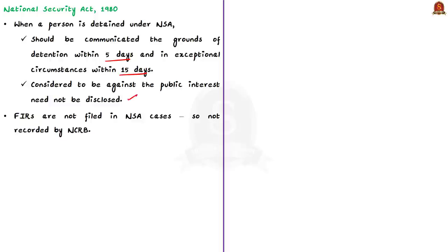This act has become much controversial in recent days, as many times it was invoked in cases of cow slaughter, Muharram processions, etc. NSA cases are not available in the National Crime Records Bureau since FIRs are not filed in NSA cases, so the exact number of preventive detentions is not known to the common public. There is much criticism and public demand to repeal this National Security Act. However, to protect the interests of the country in times of high radicalism and extreme hostilities with neighbours, preventive detention laws are obviously required. But it is the government of the day that should ensure that such laws are used only for genuine reasons.